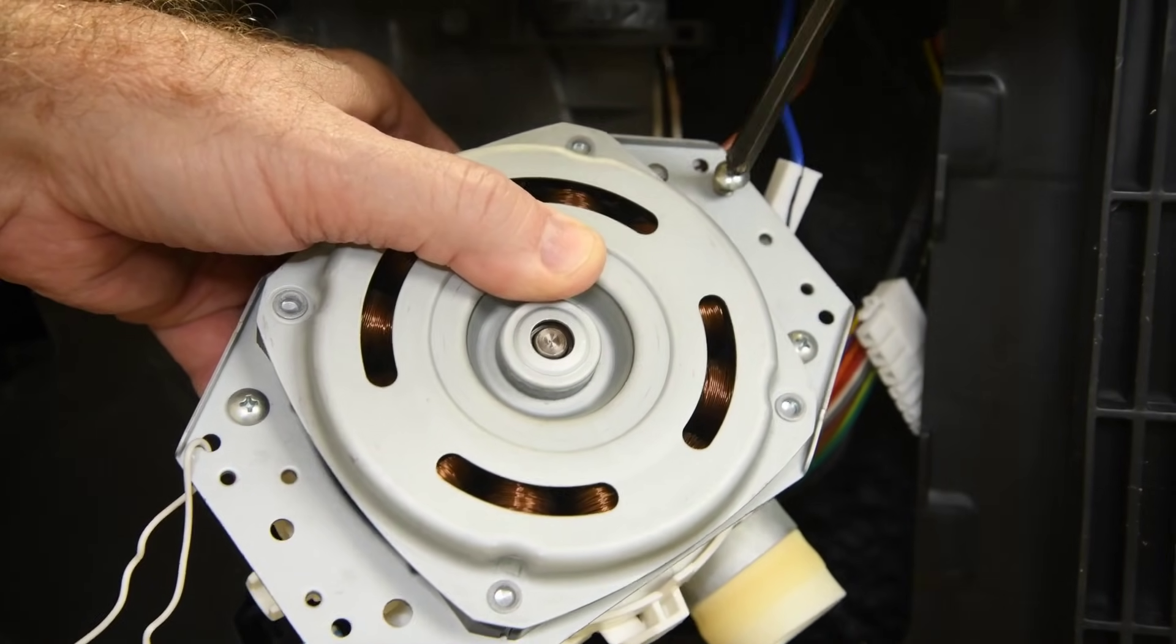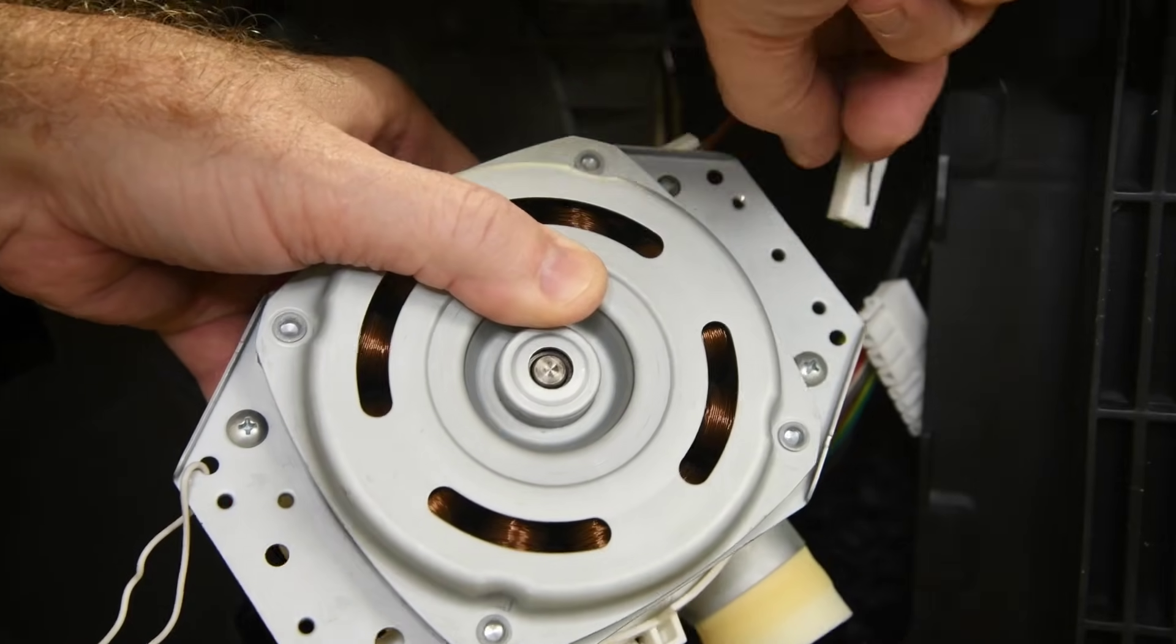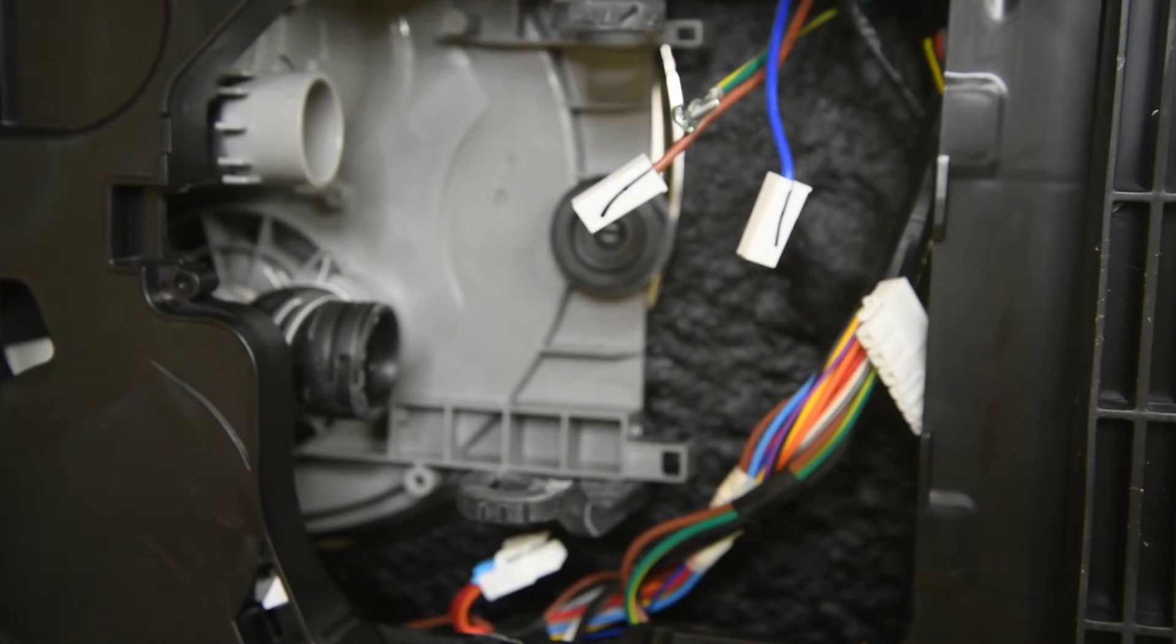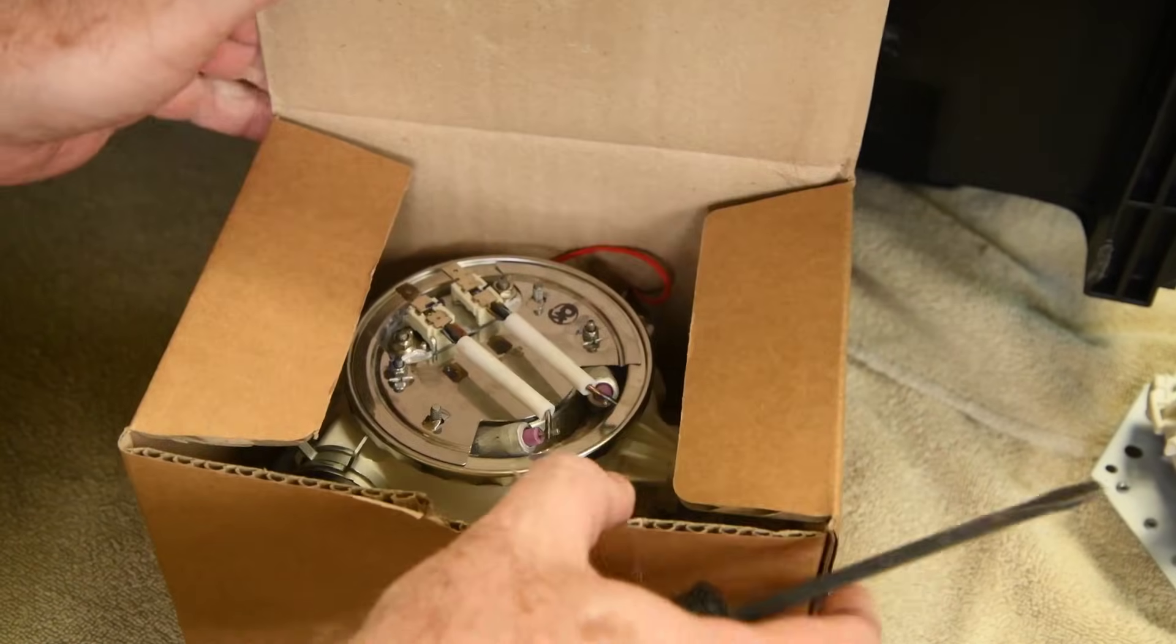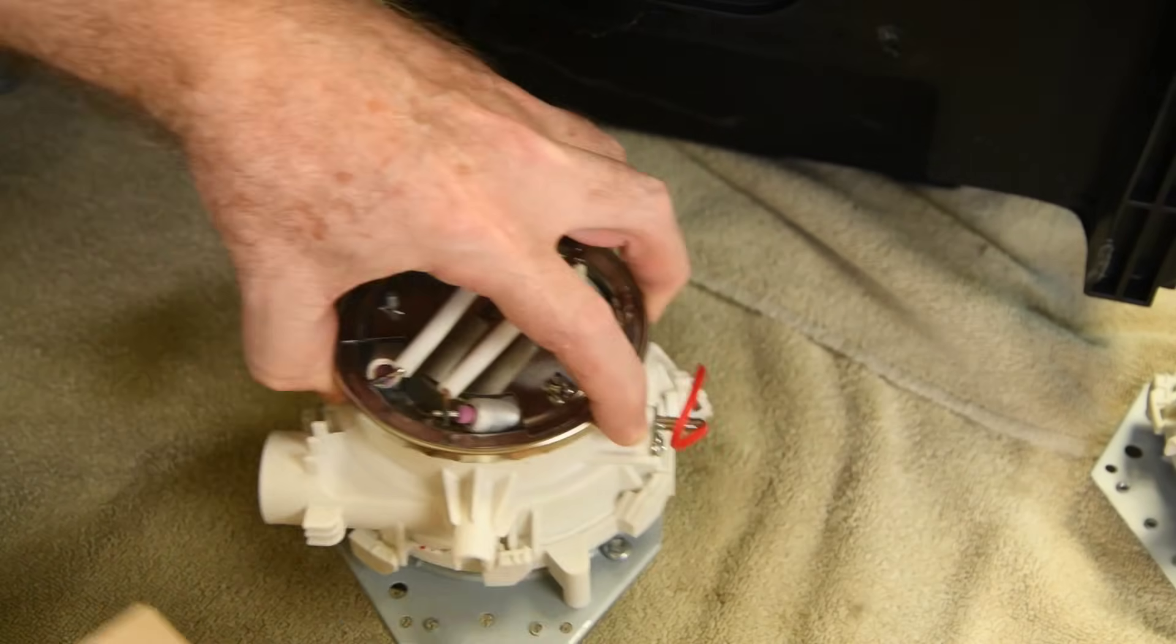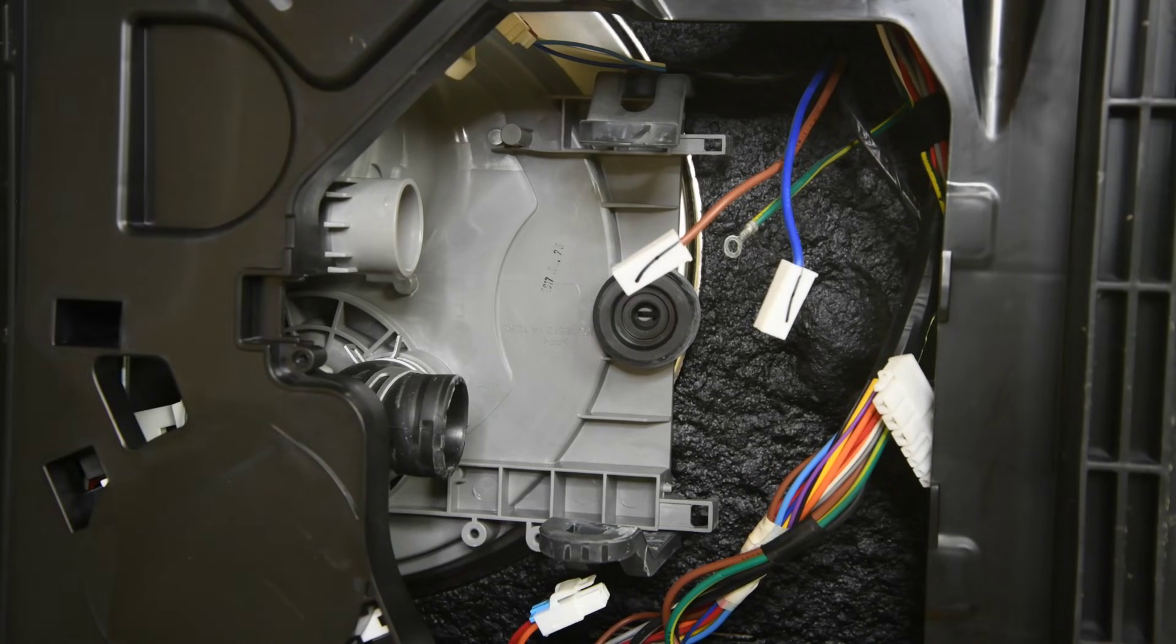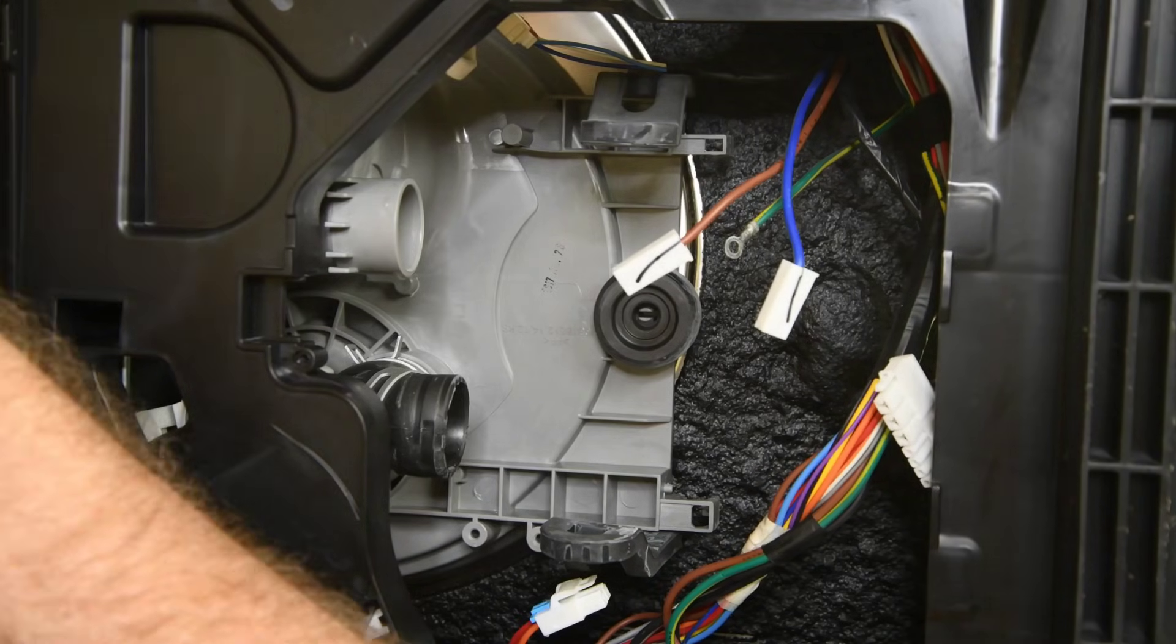The last thing holding the pump in is the ground wire. It just has to be unscrewed. And it's out. That wasn't bad. Really a nice layout by LG here. Well, it looks like an OEM part. Pump looks identical. You can see the pump and motor are isolated from everything else by rubber pieces. Going that extra mile to try and isolate pump noise from the cabinet. Very nice.